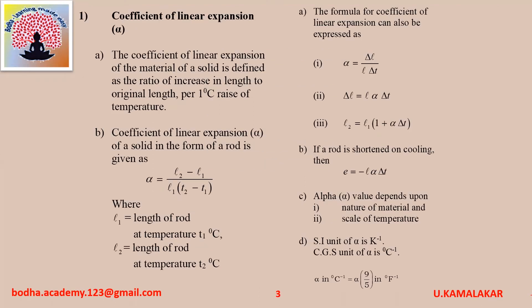Coefficient of linear expansion of a material of a solid is defined as the ratio of increase in length to original length for one degree rise of temperature. Coefficient of linear expansion of a solid in the form of a rod is given as alpha equals (L2 minus L1) divided by (L1 into T2 minus T1), where L1 is length of rod at temperature T1°C and L2 is length of rod at temperature T2°C.